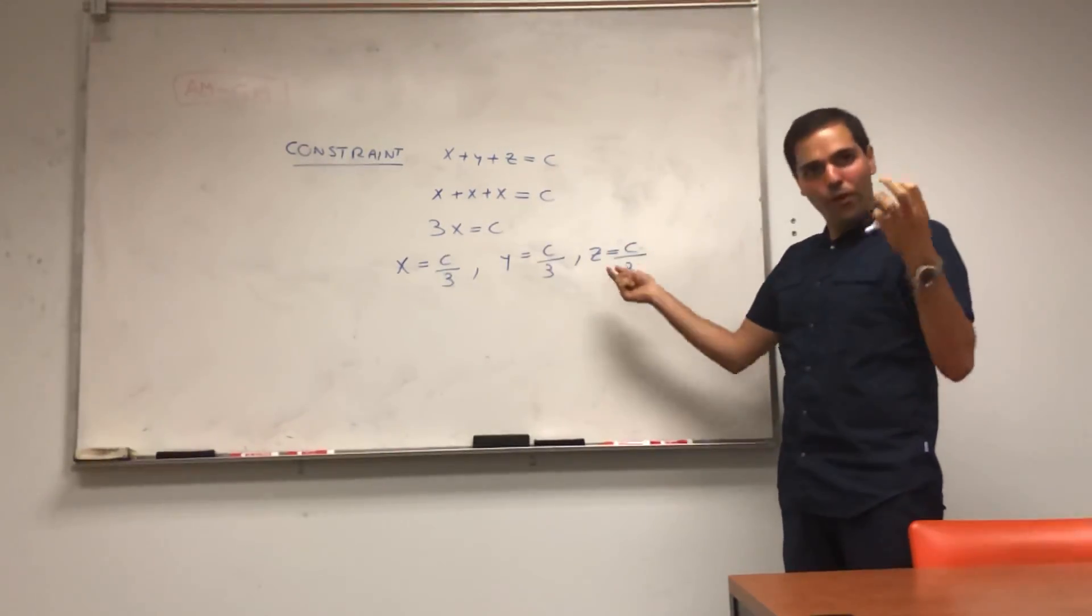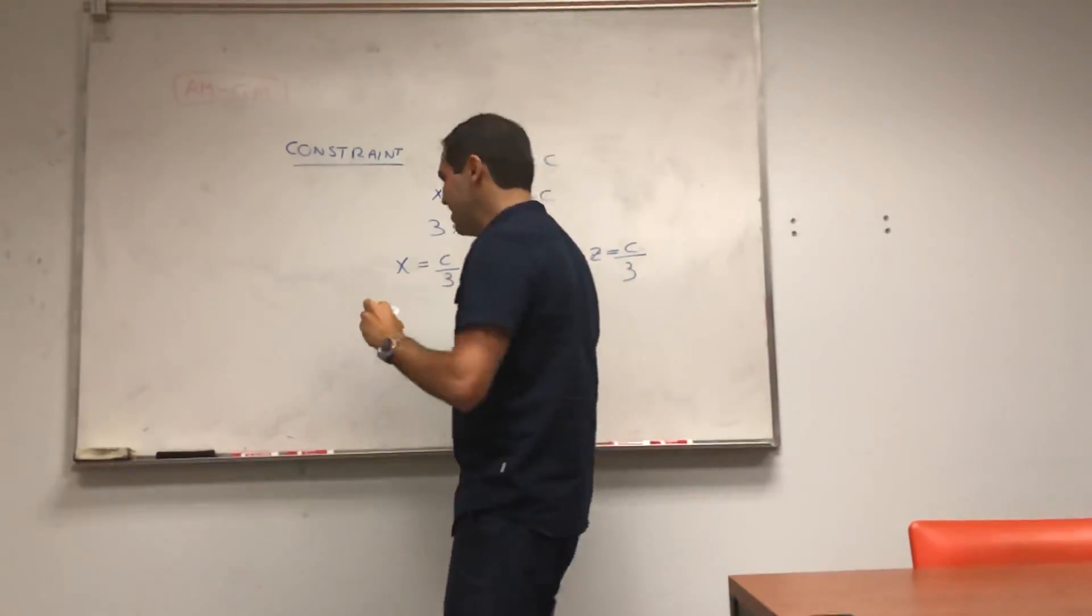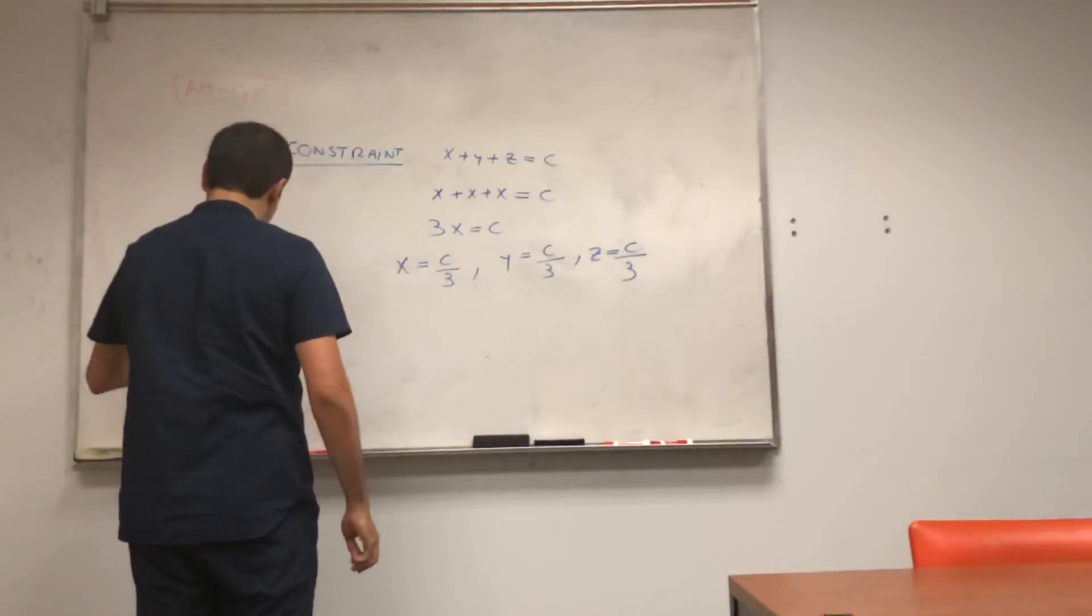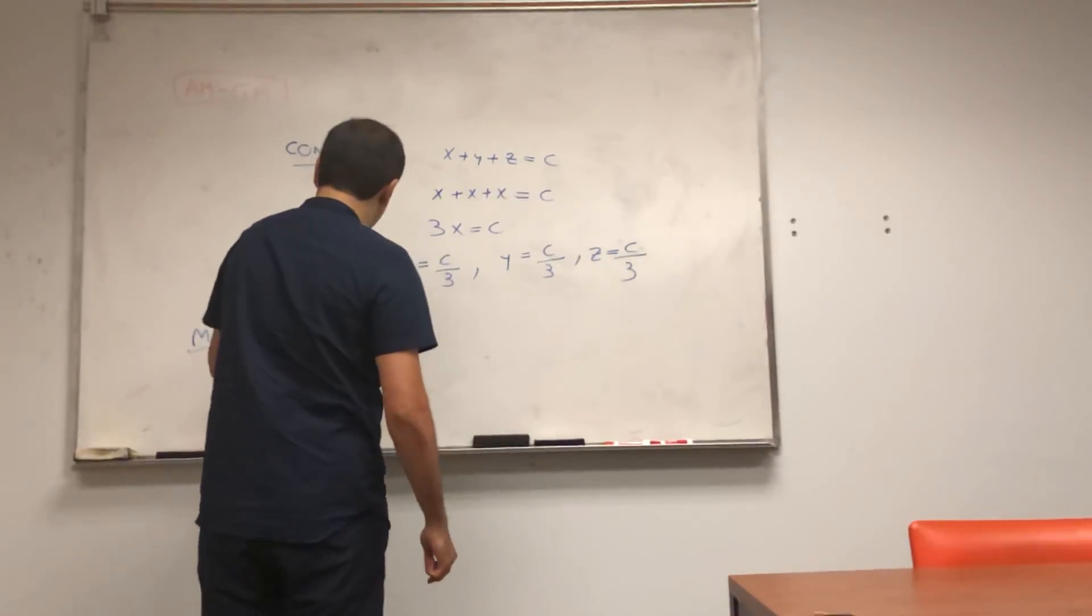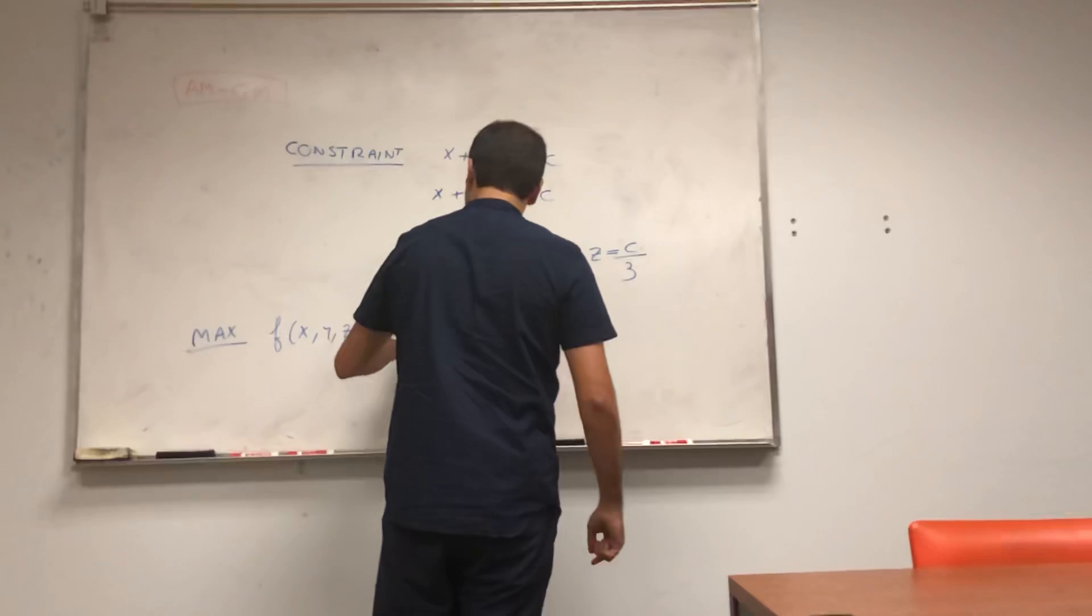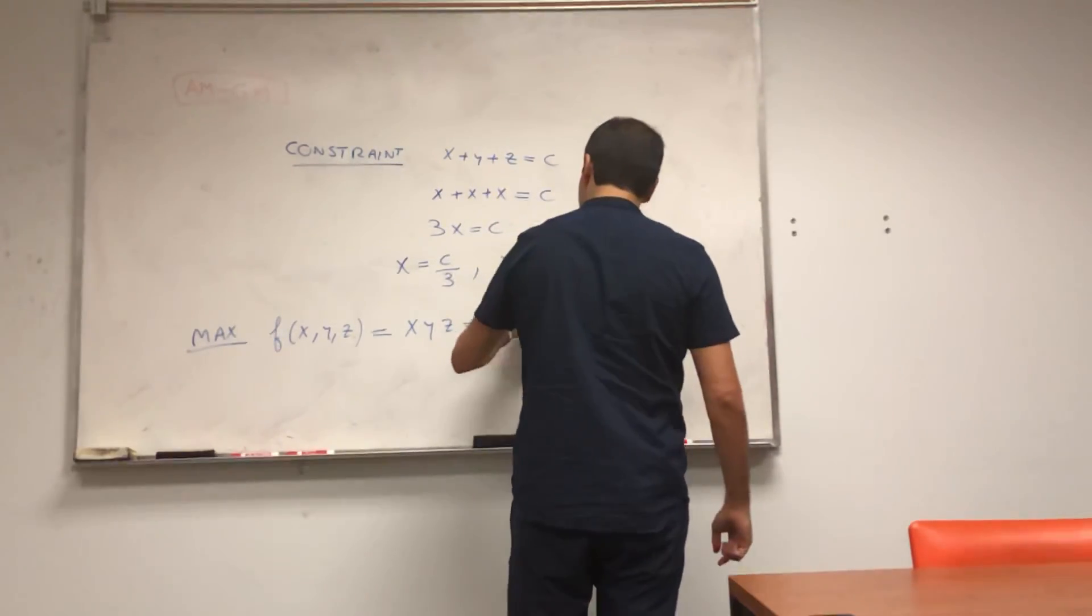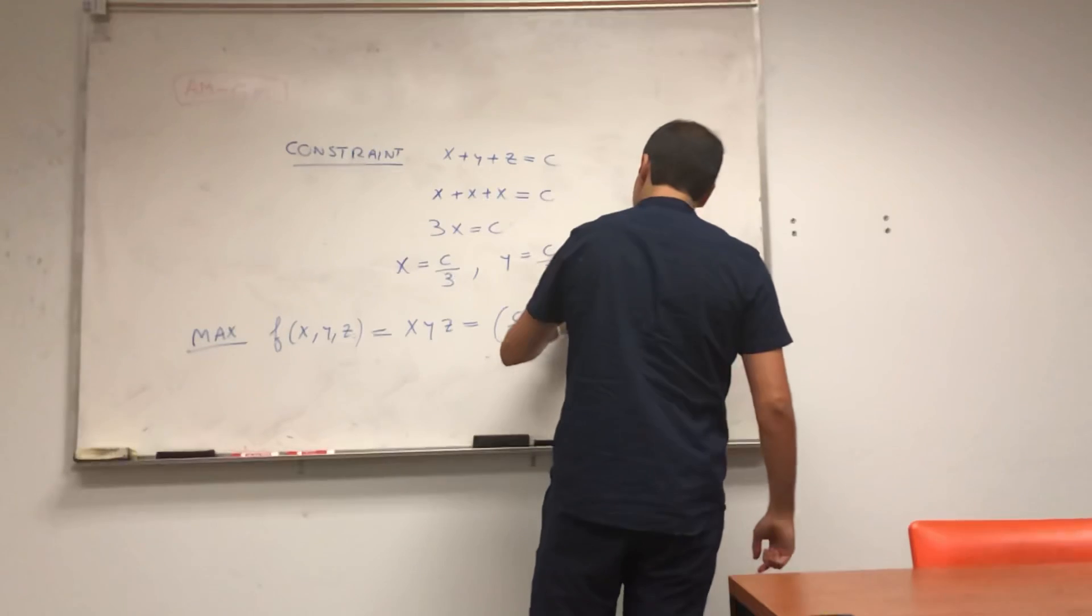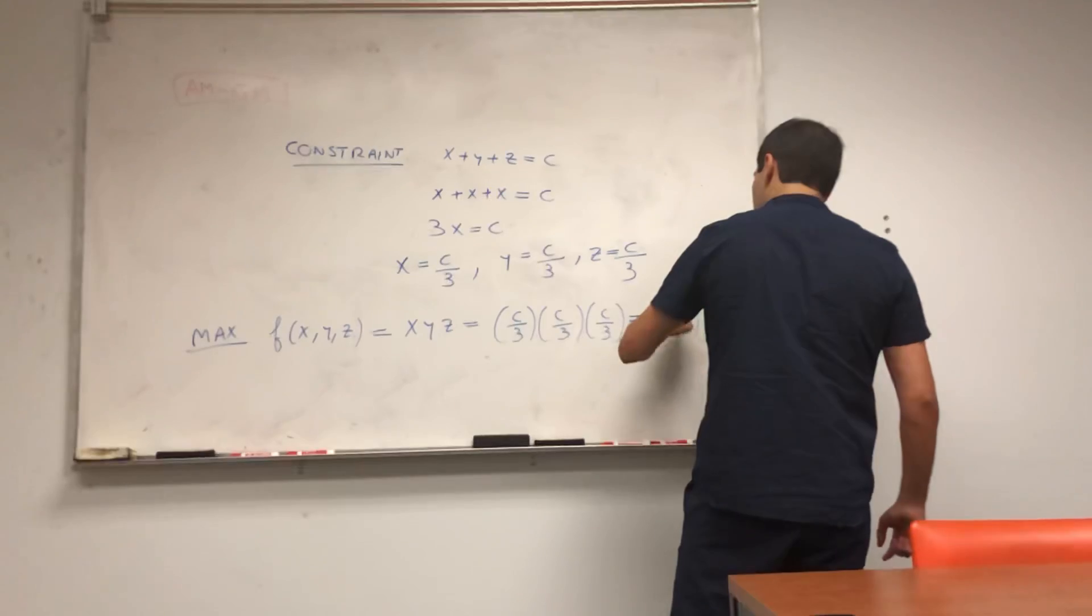This gives us a point where we have a maximum. But the question is, what is the maximum? Well, just plug it into f. So f of x, y, z is x, y, z. And that's c over 3, c over 3, c over 3. And let's just leave it like c over 3 cubed.